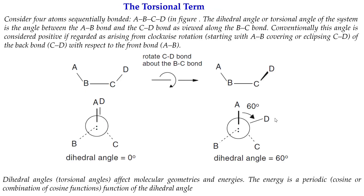Next we express the torsion angle, which is the dihedral angle — the angle between two planes. For a molecule A-B-C-D, consider the plane containing atoms A, B, C and another plane containing atoms B, C, D. The angle between these two planes is called the dihedral angle. Looking along the B-C bond, the difference in orientation between A and D gives the dihedral angle.